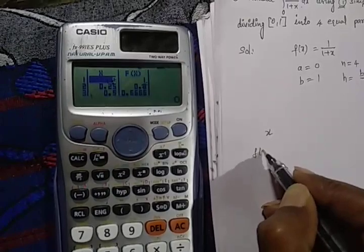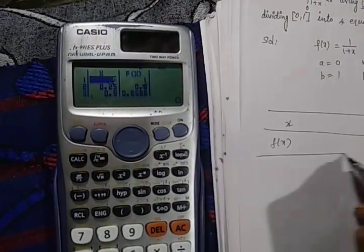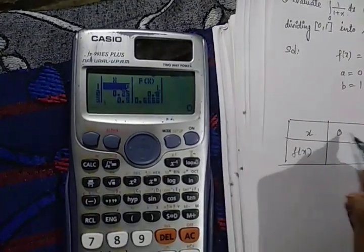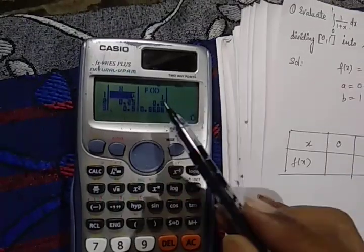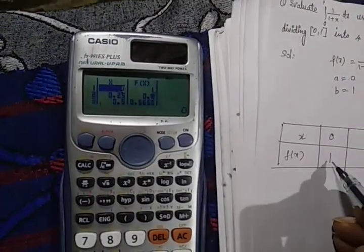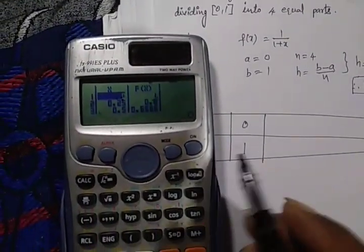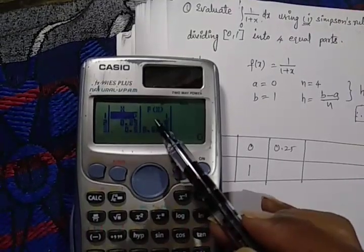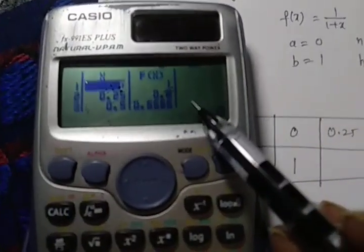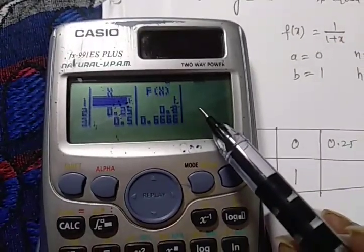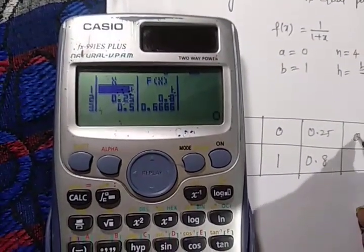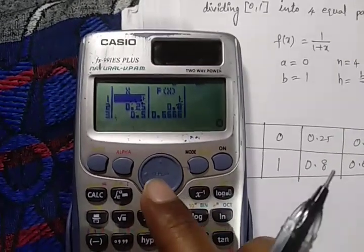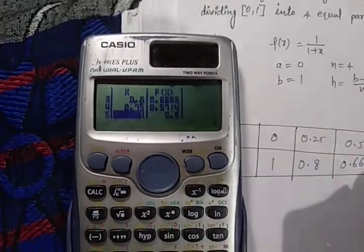Write down the table of x and f(x) values. When x = 0, f(x) = 1. When x = 0.25, f(x) = 0.8. When x = 0.5, f(x) = 0.6666.